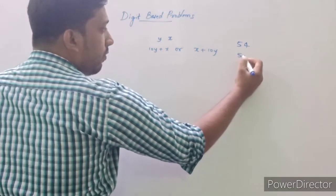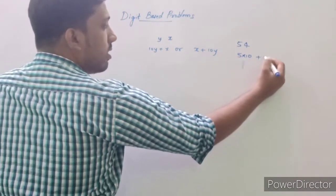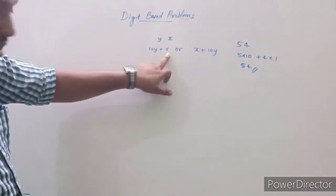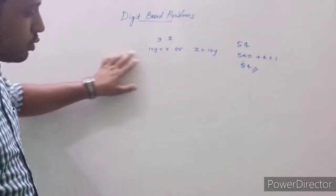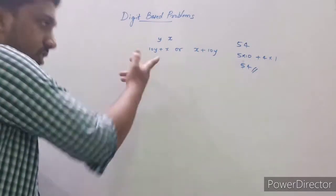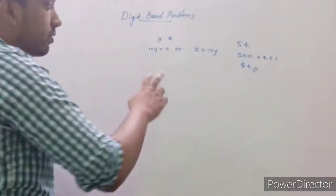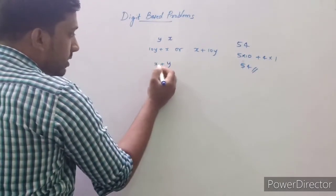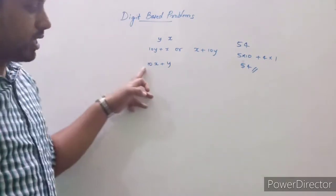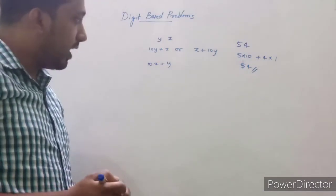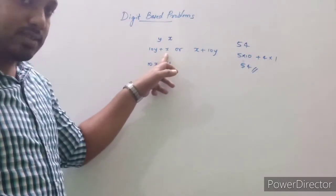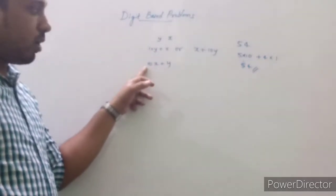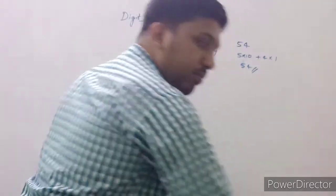To summarize: let the units place be x and the tens place be y, then the number becomes 10y + x. For example, in 54, 5 × 10 + 4 × 1 = 54. Similarly with x in units and y in tens, we get 10y + x. Now if we reverse the digits, the units place takes y and the tens place takes x, so the reversed number becomes 10x + y. You must be careful about this distinction when solving problems.